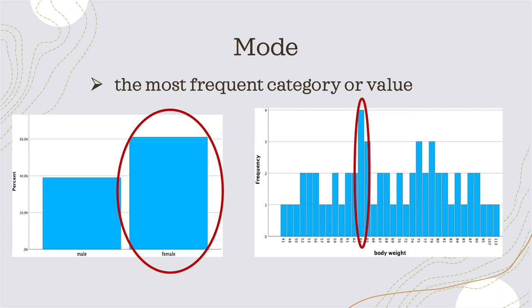Moving on to the first measure I want to introduce: the mode. This is a measure of central tendency — I will introduce other measures of central tendency today. We want to find out where the most relevant data lie in our variables.